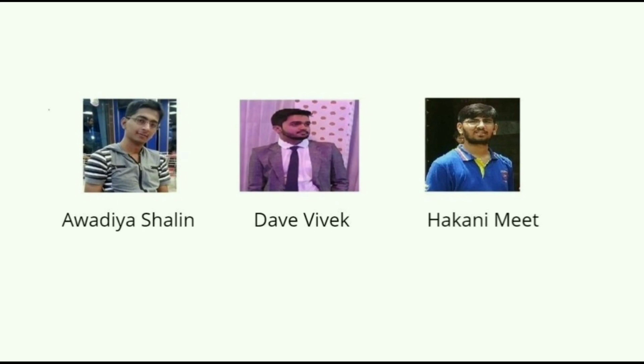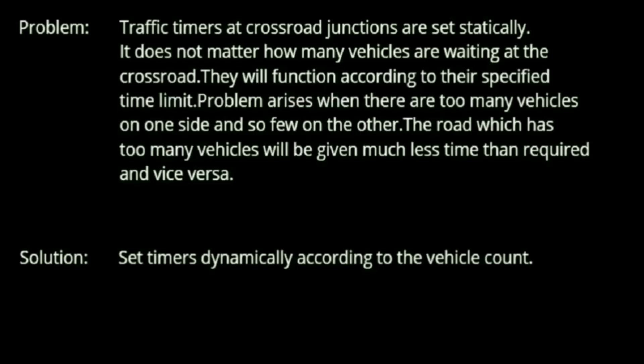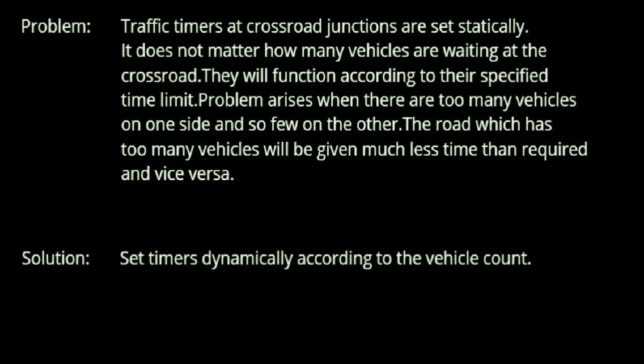Before we talk about the system let us first define the problem. We must all have passed through traffic junctions at crossroads. We know that the timers there are set statically irrespective of the number of vehicles waiting at the crossroad. There will be an increase in traffic at the junctions when the side having more vehicles is given less amount of time to pass and vice versa. Hence a possible solution could be to set timers according to the number of vehicles waiting at the crossroad.